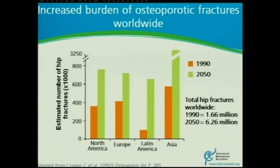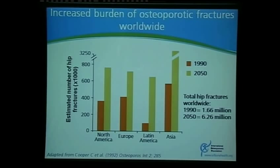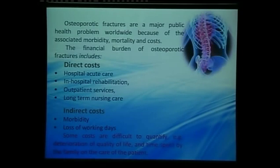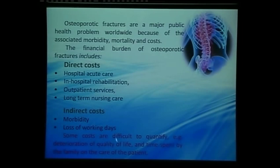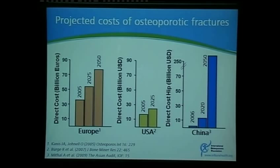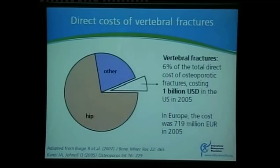There is an increased burden of osteoporotic fracture worldwide, but it's going to be more so in Asia. By 2050, we believe there will be an explosion of fractures, including hip and vertebral fractures, because we have a young population that's going to age. If we do not address the problem early, we're going to be facing a huge problem. It incurs direct costs of medical treatment, rehabilitation, and long-term care, as well as indirect costs of morbidity and loss of working days. The projected cost is going up in Europe, USA, but especially in Asia.